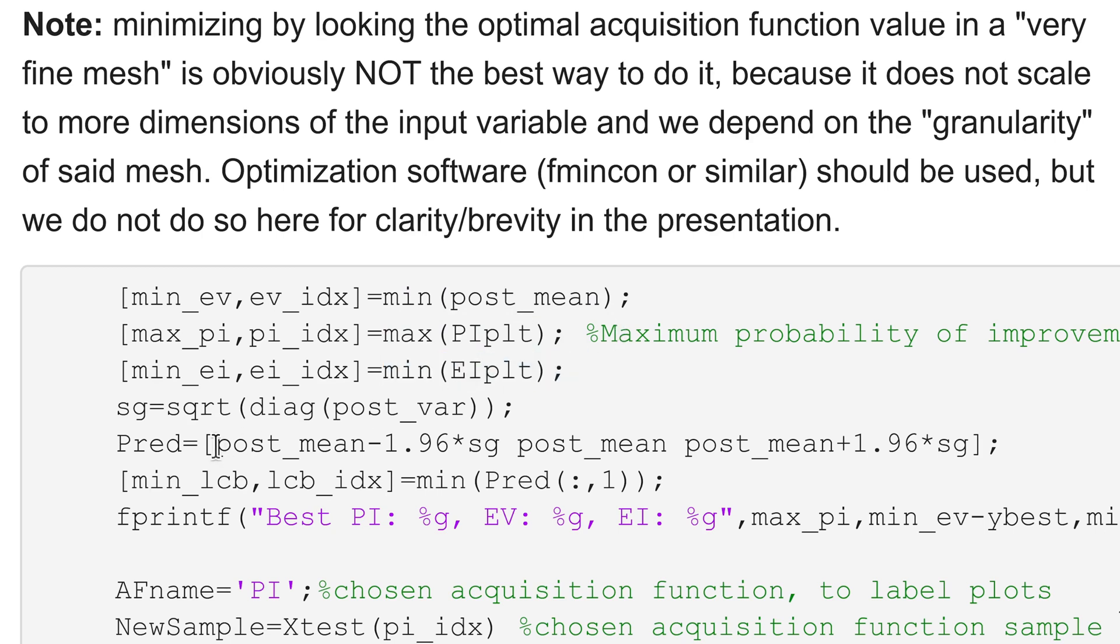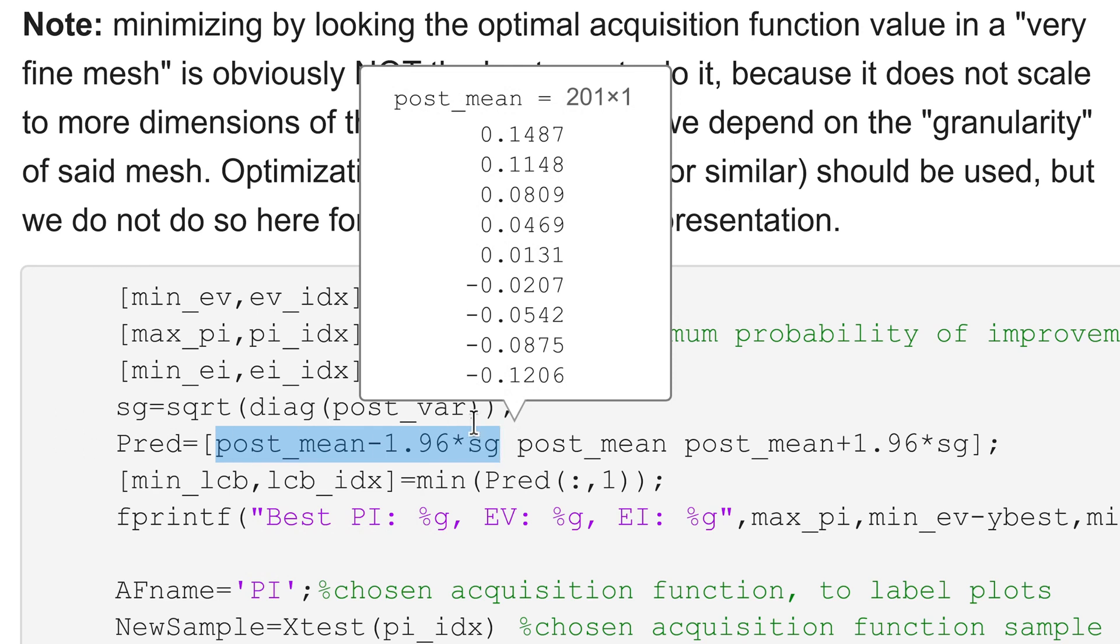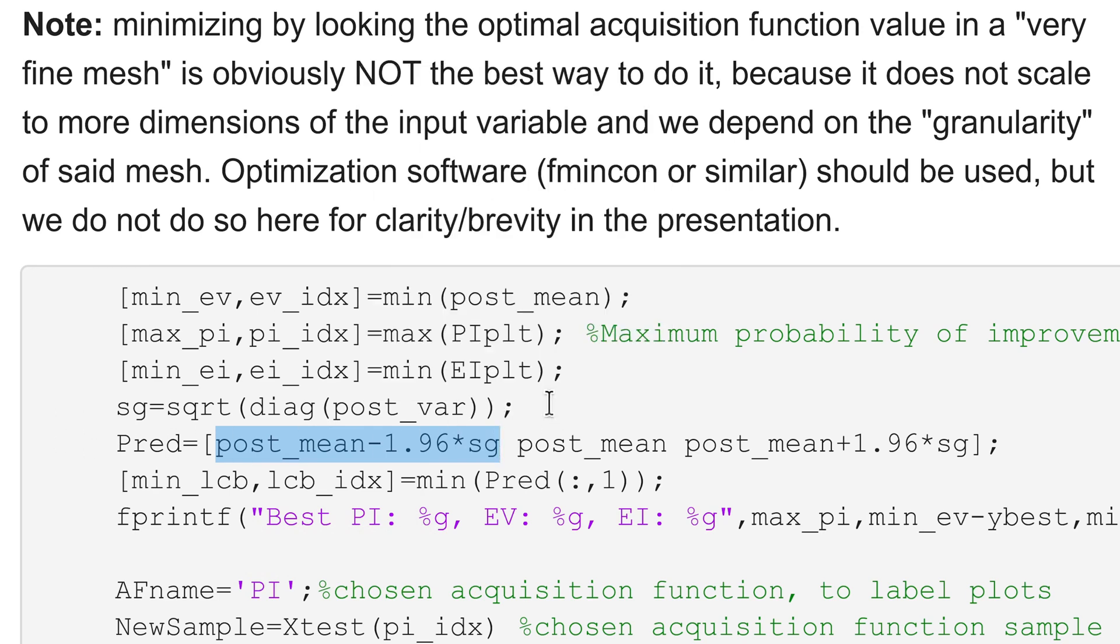Or this is the lower confidence bound. The minimum of this thing with sigma being the square root of the variance, the minimum of this thing will be the one recommended to sample from the lowest confidence bound heuristics.